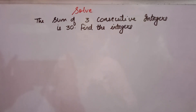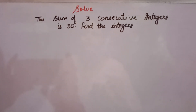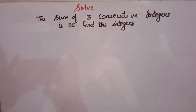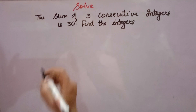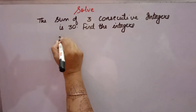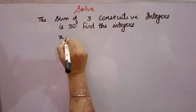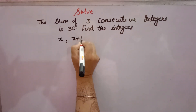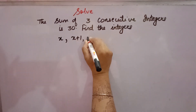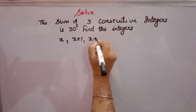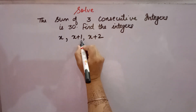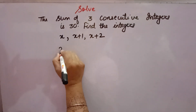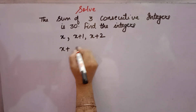Welcome back to your favorite channel, Math Helpers. The sum of three consecutive integers is 30 — find the integers. Let the first integer be x, the second x plus one, and the third x plus two, since they are consecutive. Now their sum is given.